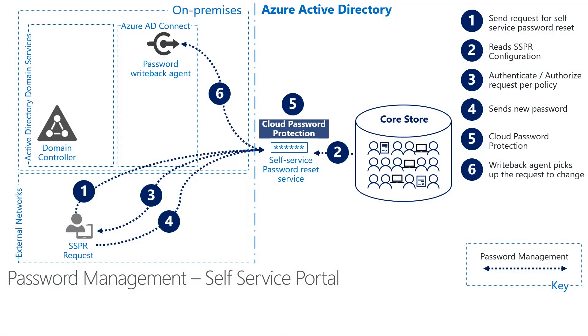For step six, once cloud password protection has deemed that the password isn't considered banned, the password can be reset. For cloud users only, the hash of the new password is stored in Azure Active Directory. Having a cloud-based password reset utility is great, but most companies still have an on-premises directory where the user exists. So how would SSPR work for them?